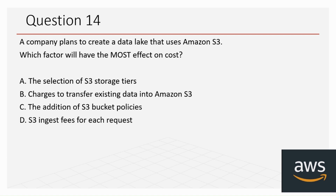Question 14: A company plans to create a data lake that uses Amazon S3. Which factor will have the most effect on cost? The options are: A) The selection of S3 storage tiers, B) Charges to transfer existing data into Amazon S3, C) The addition of S3 bucket policies, and D) S3 ingest fees for each request. The correct answer is A, the selection of S3 storage tiers.